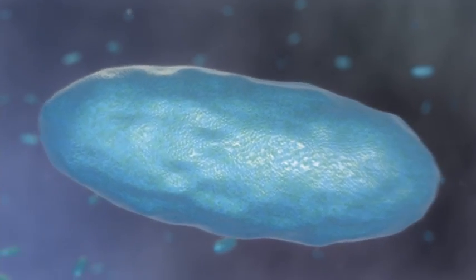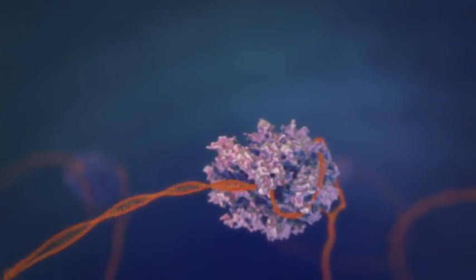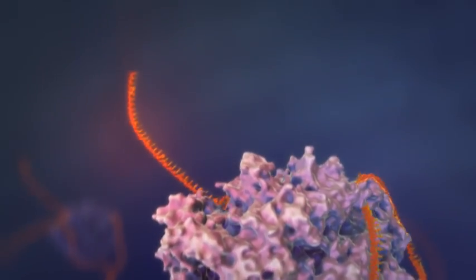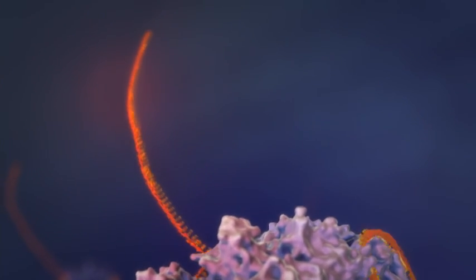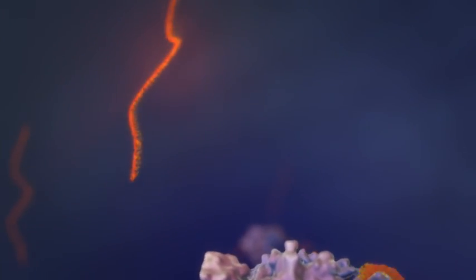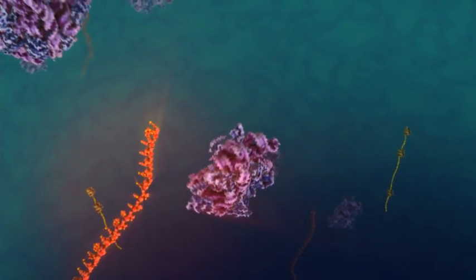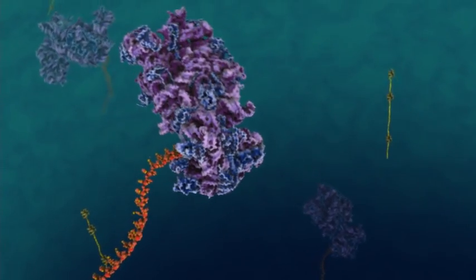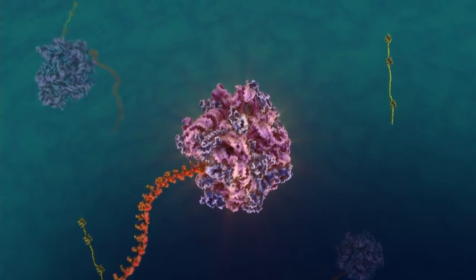This plasmid-encoded gene is subsequently transcribed by RNA polymerase, producing an mRNA message. This mRNA message is subsequently bound by a ribosome complex and begins translation into an unfolded protein molecule containing a unique peptide signal sequence.